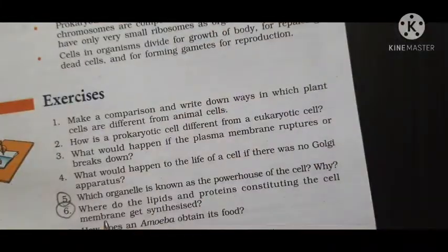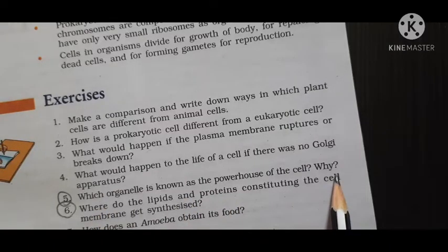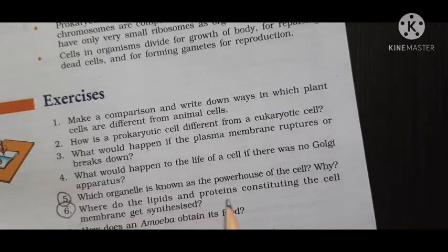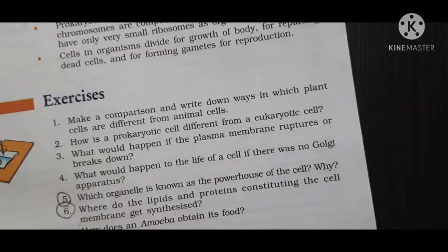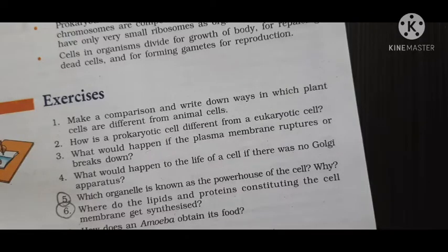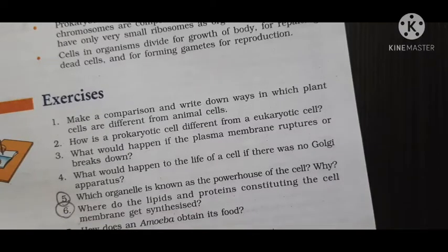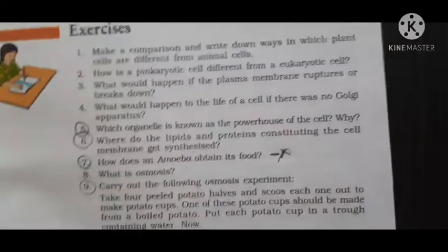Now question number 5, that is homework: which organelle is known as powerhouse of the cell and why? Question number 6 is also homework: where do the lipids and proteins constituting the cell membrane get synthesized? Question number 7: how does an amoeba obtain its food? This question students you leave, because for that you have to study the nutrition in amoeba. That is in class 10. Just leave it.